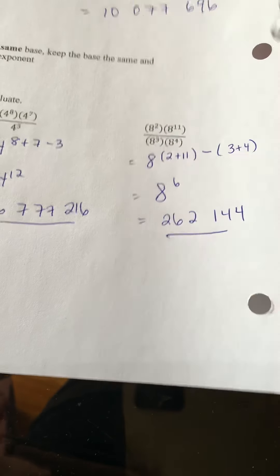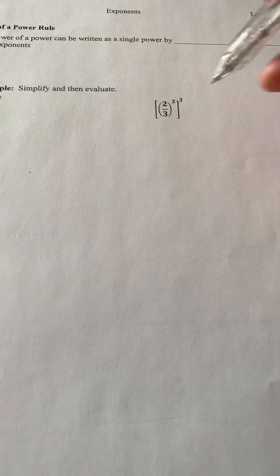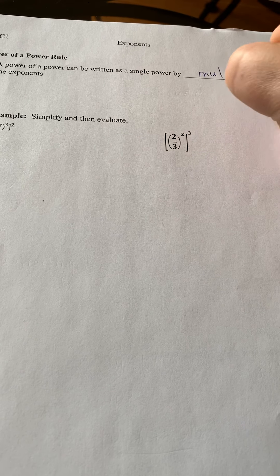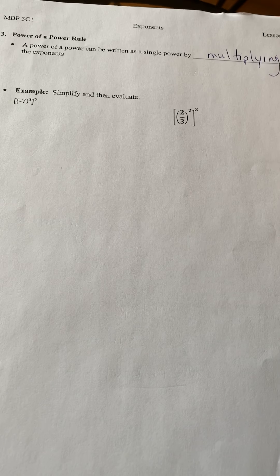So not so bad, guys. You're doing awesome. So one more example. The power of a power rule. A power of a power can be written as a single power by multiplying the exponents.